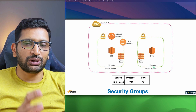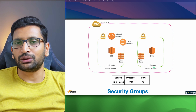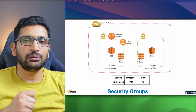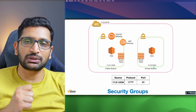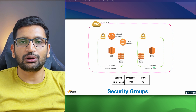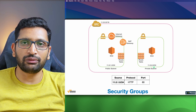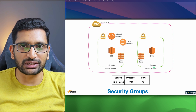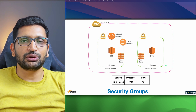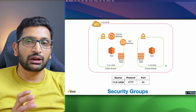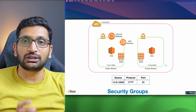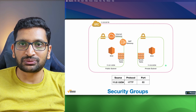Let's try to understand what is an AWS security group. AWS security groups are used to control the inbound and outbound traffic coming to your AWS resources, and these security group rules are imposed on certain ports.